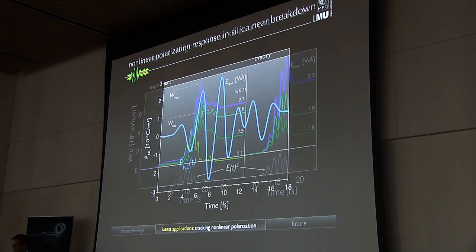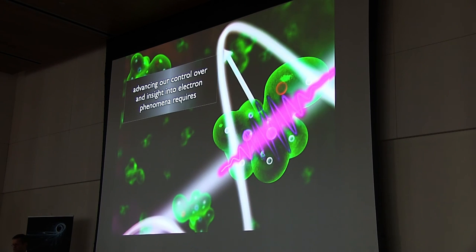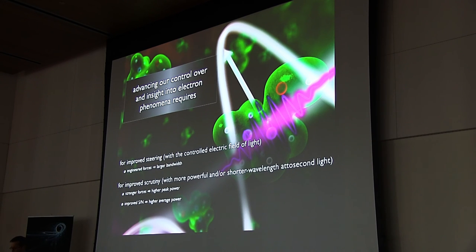I think I will just skip this and just maybe if I can have maybe three more minutes, just can very quickly through the last part of my talk. Advancing our control and insight into electron phenomena obviously requires few cycle pulses with larger bandwidth for being able to engineer the electric forces of light for improved steering. And we are also interested in much higher peak and average powers for being able to make these forces much stronger, on the one hand to produce more powerful attosecond pulses, on the other hand to produce shorter wavelengths at attosecond light, both for improved scrutiny.